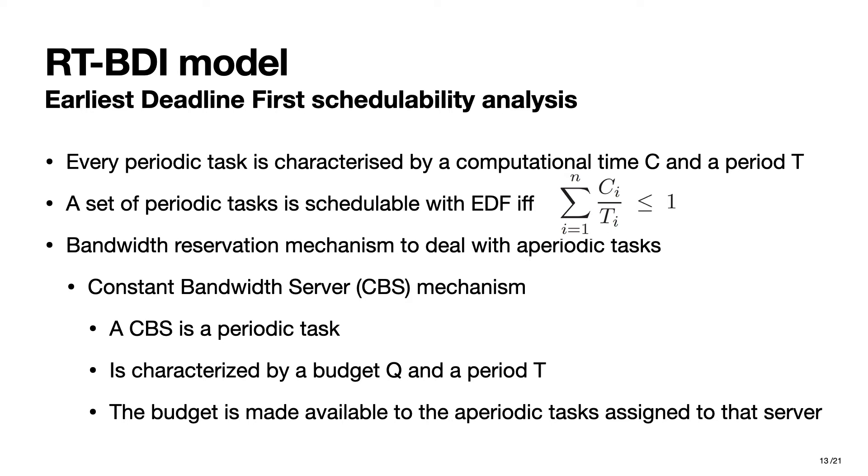The schedulability analysis of the EDF algorithm is quite trivial. C over T is the fraction of processor time spent in executing task tau. Given a set of periodic tasks and given one as the full processor utilization capacity, a set of periodic tasks is schedulable with EDF if and only if the sum for every task of their computational time C over their period T is less or equal than 1, which is the full processor utilization capacity.